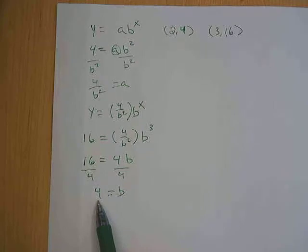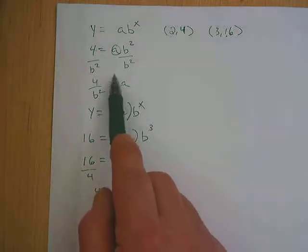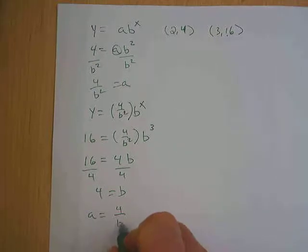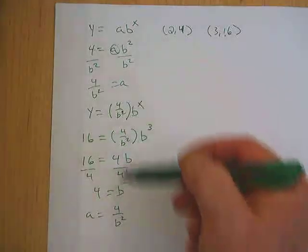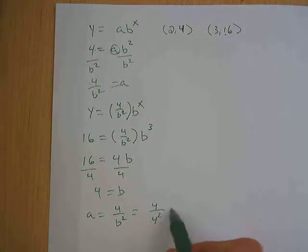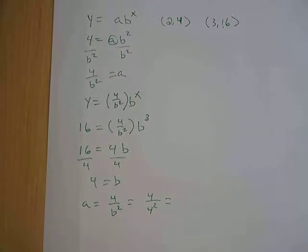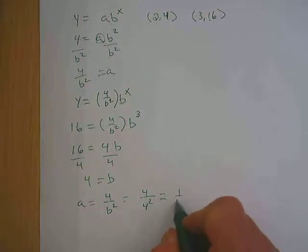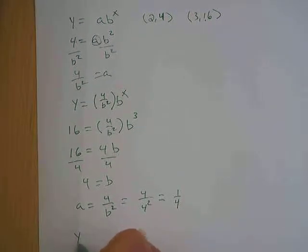I only need to figure out a and b, and I've just figured out b. And I have a nice equation here to figure out a. a is 4 over b squared. Replace my b with my 4, and 4 divided by 16 is 1 fourth, very good.